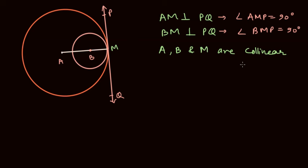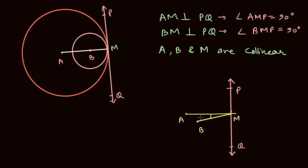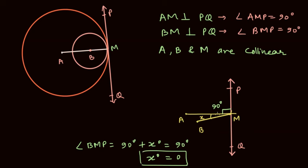Now consider this case. If points A, B, and M were not collinear, we would have a diagram where AM is drawn to PQ, and if point B was not on line AM, there would be some angle X between BM and AM. If angle AMP is 90 degrees, then angle BMP should be 90 plus X degrees. But we also know that angle BMP is 90 degrees. That makes X equal to zero. Since X equals zero, there is no deviation of segment BM from segment AM, and the angle between AM and BM is zero degrees. Therefore, B lies on line AM, and A, B, and M are collinear. This is how we prove the theorem for the internal tangency case.